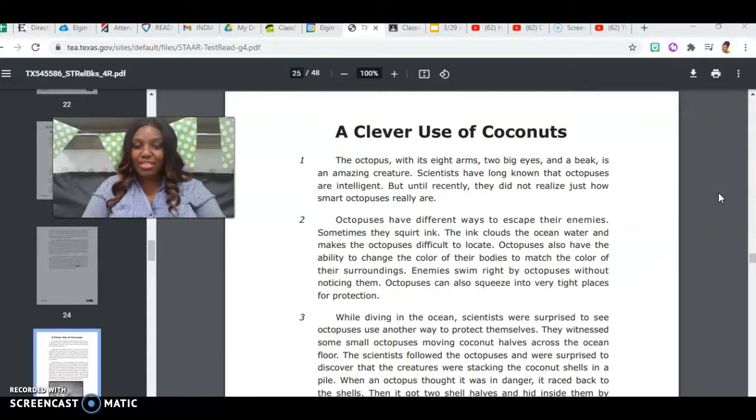Octopuses have different ways to escape their enemies. Sometimes they squirt ink. The ink clouds the ocean water and makes the octopus difficult to locate. Octopuses also have the ability to change the color of their bodies to match the color of their surroundings. Enemies swim right by other octopuses without noticing them. Octopuses can also squeeze into very tight places for protection.